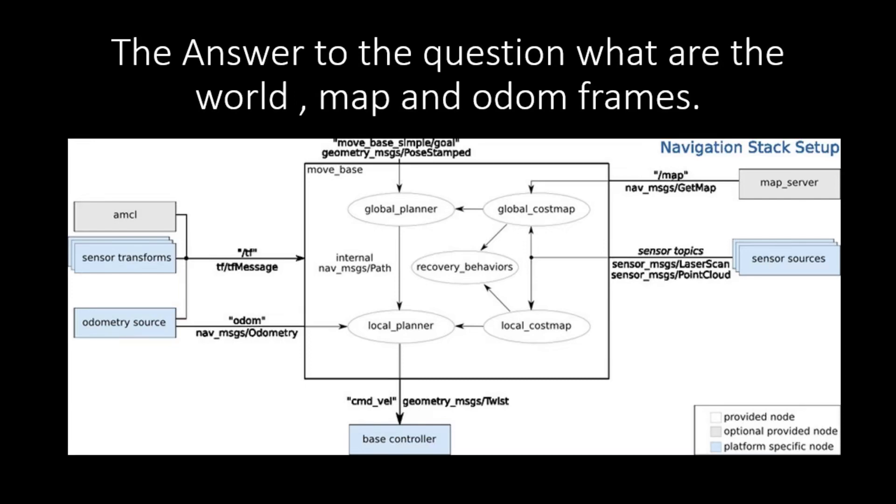Odom frame is the frame where the robot starts its navigation. The process of calculating the map to odom transform is called localization. The process of calculating odom to base link transform is called odometry. There are various plugins and algorithms available for odometry and localization.